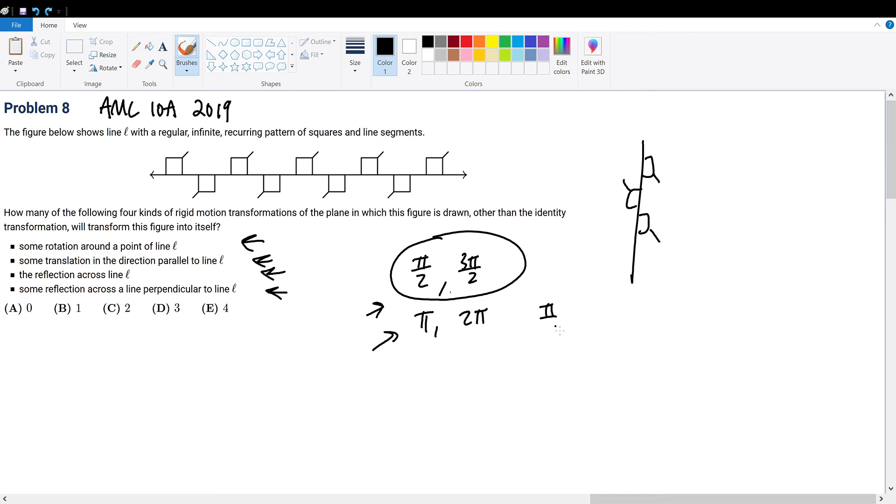We can only consider these four because any other rotations that are not multiples of pi over 2 will not even come close to changing this figure back to itself. This should be common sense and pretty intuitive. We know that we cannot use the identity transformation. That is very important. We cannot use 2 pi because, as I described previously, since this is an infinite pattern, rotating by 2 pi will never change anything while still maintaining its original self.